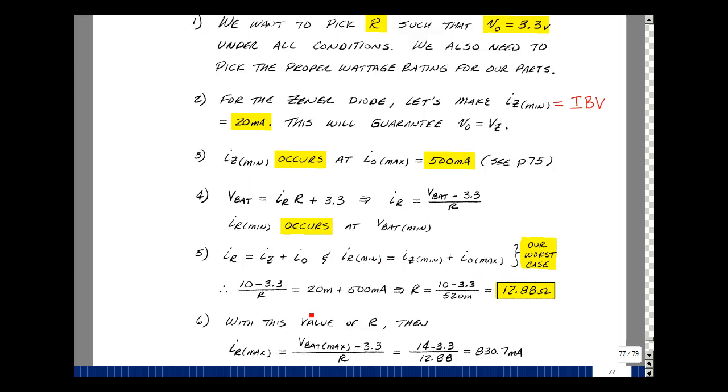So we can now solve for the resistor. 10 volts would be our minimum battery value minus the Zener voltage divided by R, and that would have to equal the least amount of current in the Zener and the most in the load. We can solve for the value of R. This is 520 milliamps. We can bring the R over here, and that turns out to be 12.88 ohms.